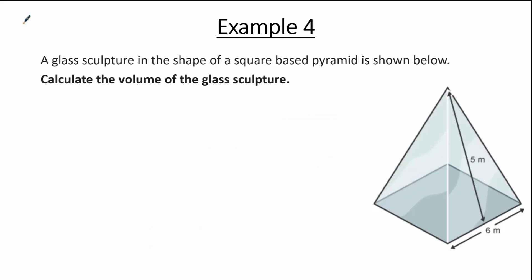Let's take a look at the final example of this tutorial. A glass sculpture in the shape of a square-based pyramid is shown — calculate the volume of the glass sculpture. The base is a square with side length 6 m. We are given a measure of 5 m, which is the slanted height of the pyramid. Therefore the vertical height is not given, making this more challenging than previous examples, as we need to find the vertical height first. You can now pause this video and have a go, then press play for the solution.